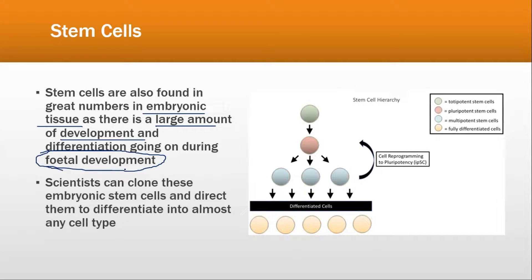The baby being produced inside the mother needs every kind of cell. Stem cells would divide into nerve cells, red blood cells, and each cell type required. Scientists have also found a way — they can clone embryonic stem cells and direct them to differentiate into almost any cell type.